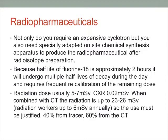The radiation dose is somewhere between 5 to 7 millisieverts, where a chest x-ray in comparison is 0.02, so it's quite a high radiation dose. When combined with CT it can be up to 23 to 26, though this is probably an overestimation — it's usually more like 12 to 13 — and so it must be justified.